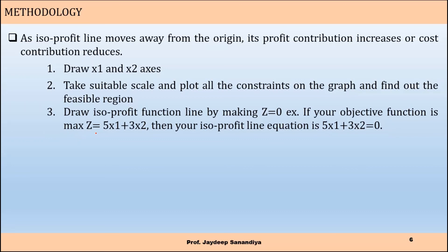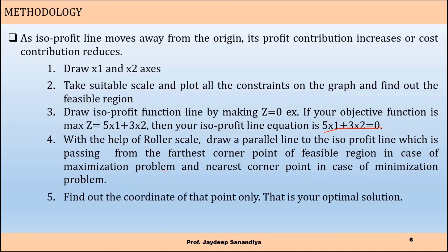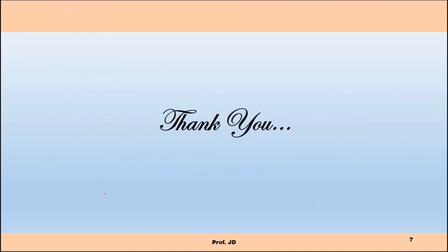For example, if your objective function is maximize z = 5x1 + 3x2, your isoprofit line becomes 5x1 + 3x2 = 0. Using a ruler, draw a parallel line to the isoprofit line that passes through the farthest corner point of the feasible region in case of a maximization problem, or the nearest corner point in case of a minimization problem. Find the coordinates of only that point — that is your optimal solution. In the isoprofit function line approach you only need to find the coordinates of one corner point, not all of them.